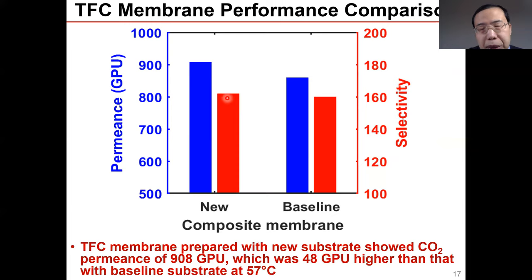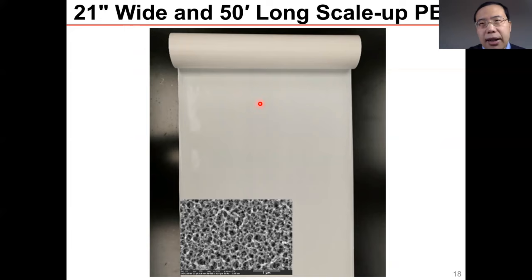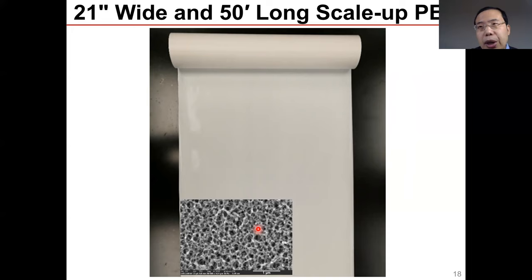By using the new substrate, we fabricated the new composite membrane. The CO2 permeance of the new composite membrane is more than 900 GPU — a 14,000 GPU increase compared with the composite membrane prepared on the baseline substrate. The selectivity is quite similar, slightly higher with the new substrate, but roughly the same.